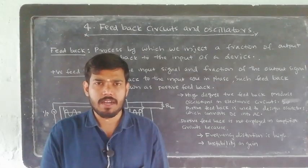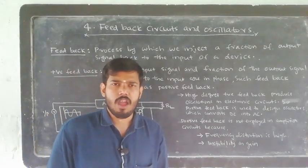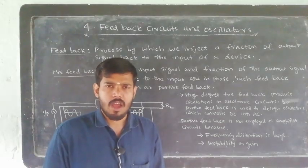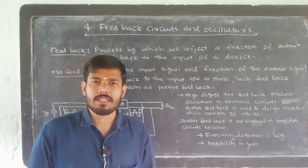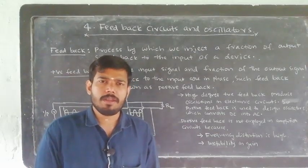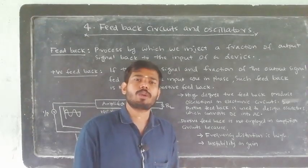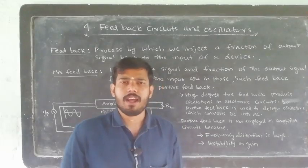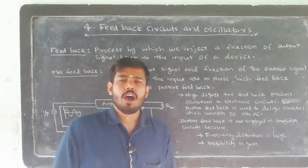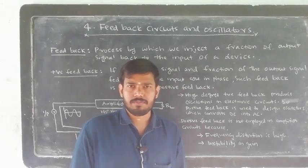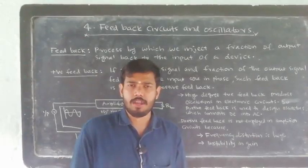What is the feedback mechanism? What is feedback? We have an input signal and an output signal. The amplifier amplifies a weak signal. What is the feedback? The feedback is the process by which a fraction of the output signal is given back to the input of the circuit or device. The process by which a fraction of the output signal is injected back to the input of the device or electronic circuit is known as feedback.